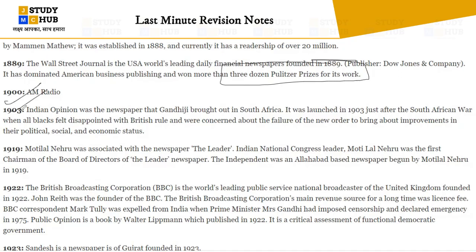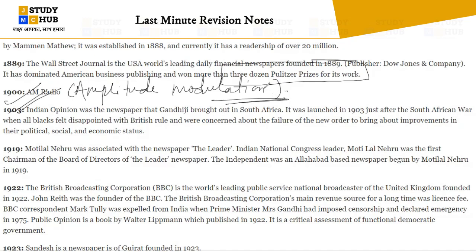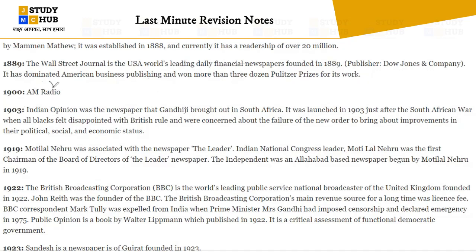In 1900, the concept of AM radio — Amplitude Modulation — emerged. In AM, amplitude is modulated and frequency is constant, whereas in FM, frequency is modulated and amplitude is constant. You should know the differences between AM and FM. In 1900, the concept of AM radio began.